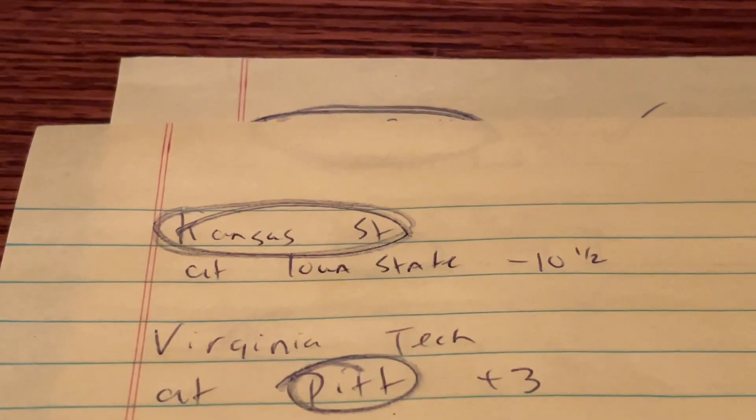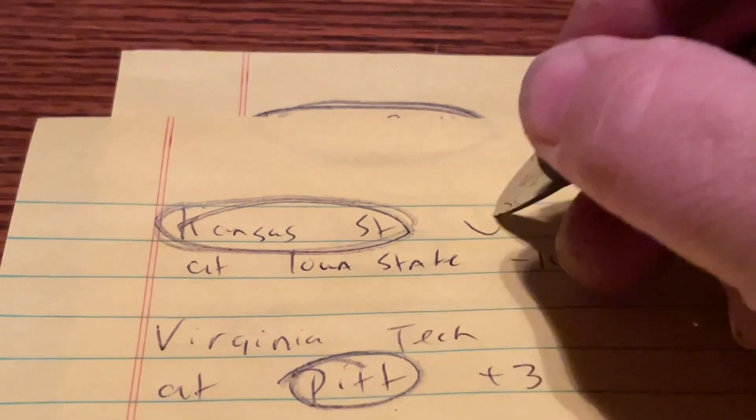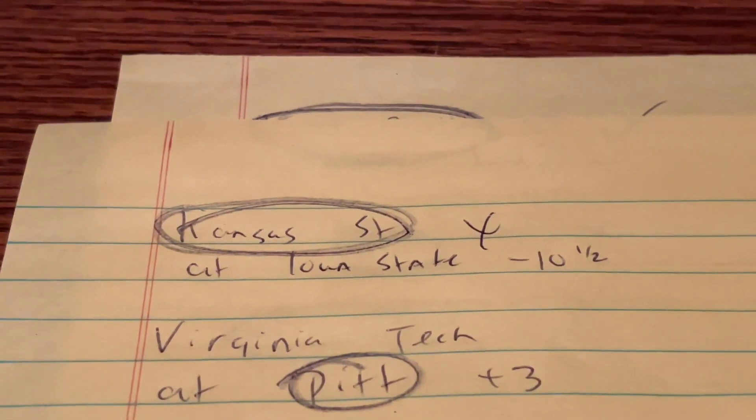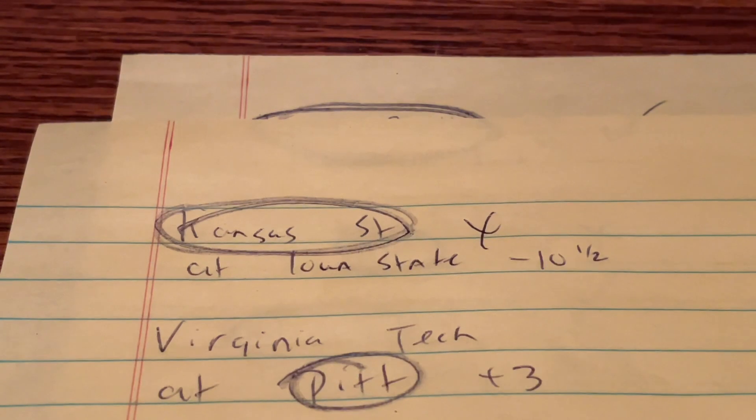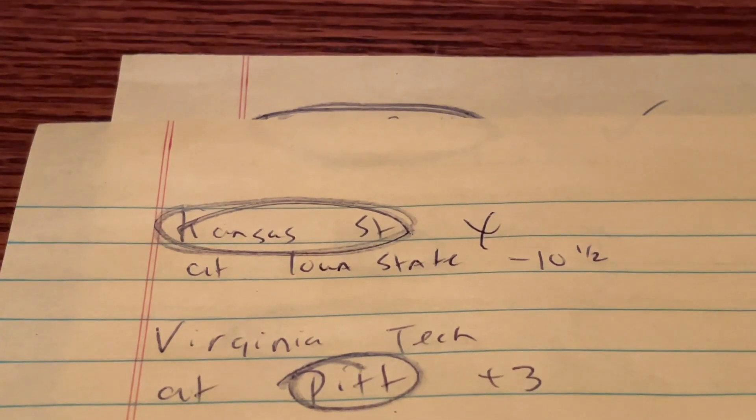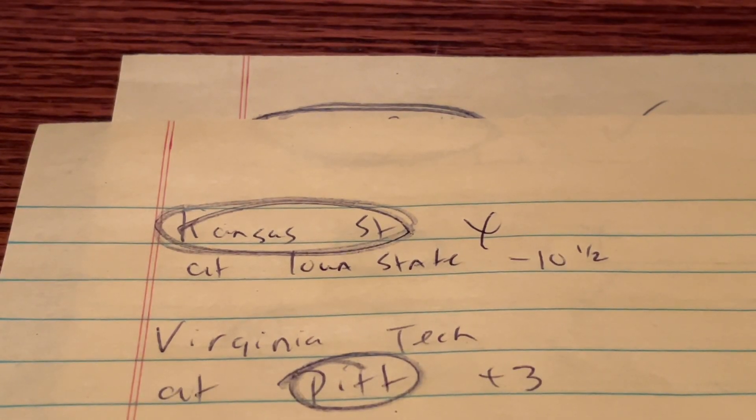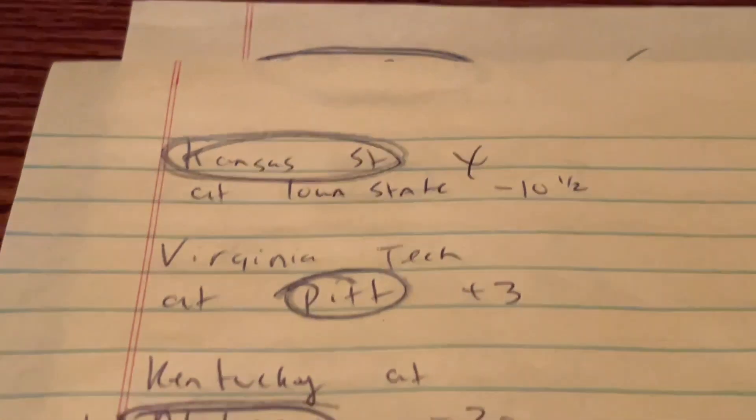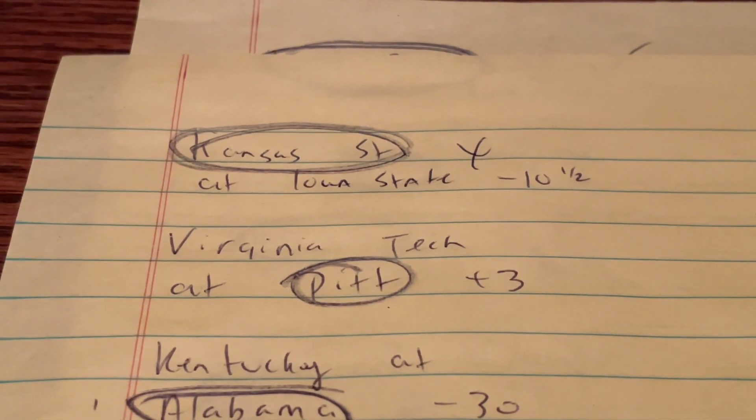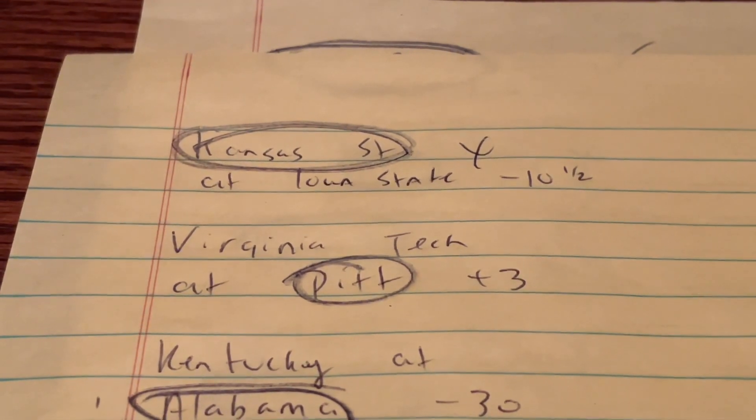K-State at Iowa State. Oh man. I got rocked on that one. Kansas State looked awful. 45-0. Nothing. They lost. I would not have picked them had I known they had a lot of coronavirus issues. A lot. So I probably wouldn't have picked them had I known that. But you know, I don't know. Let's say hindsight's 20-20, I guess.